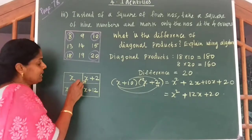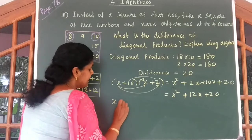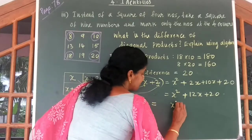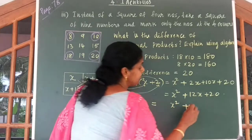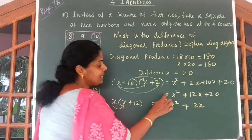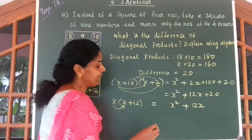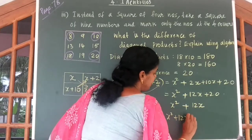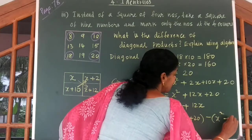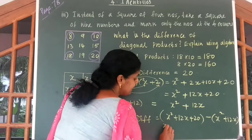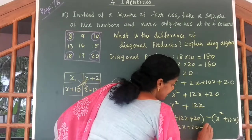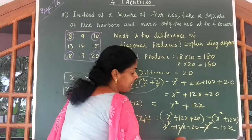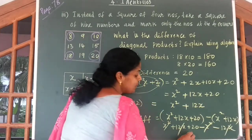Now let us multiply x with x plus 12. So x into x gives you x squared, x into 12 gives you 12x. Now let us find the difference between these two diagonal products. You get (x squared plus 12x plus 20) minus (x squared plus 12x). x squared cancels with minus x squared, 12x cancels with minus 12x. You get back 20.